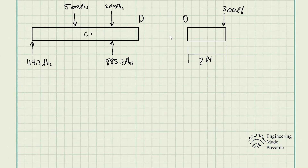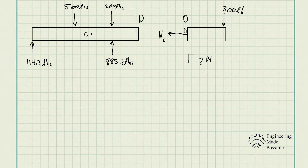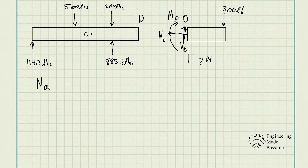Now we analyze the shear and moment at point D. As previously mentioned, you can choose either side of the cut. Looking at the right side of section D, there is only one force being applied, making it much simpler to solve. We draw the internal forces: normal force ND, shear force VD (upward by convention), and moment MD (clockwise). Since there are no X-direction forces, ND equals 0.